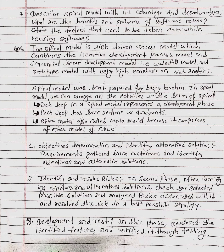Spiral model is also called a meta model because it comprises other models of SDLC. First phase: objectives determination and identify alternative solutions. Requirements are gathered from customers and objectives and alternative solutions are identified.